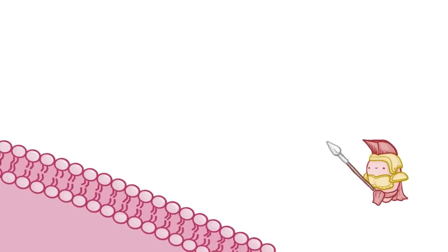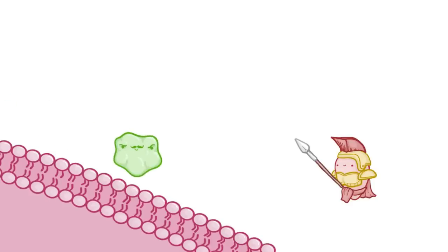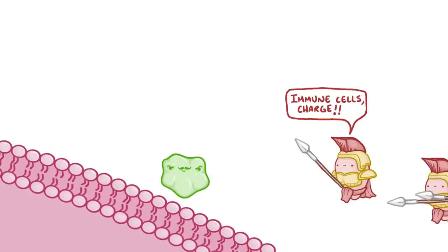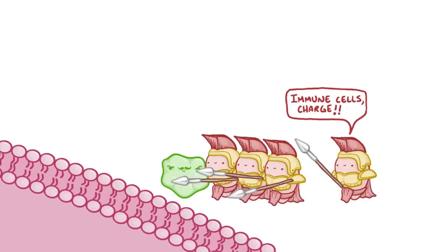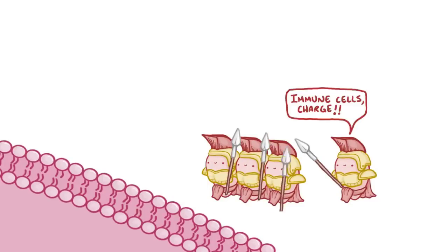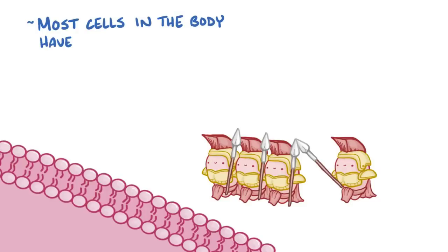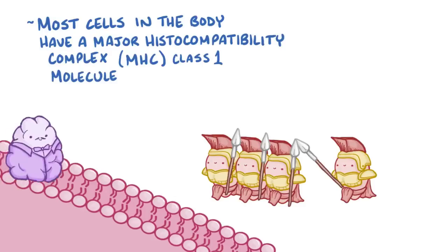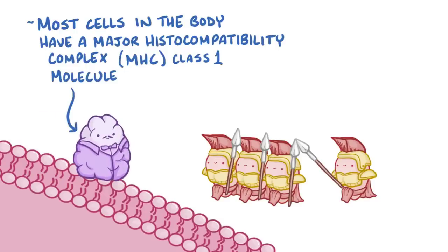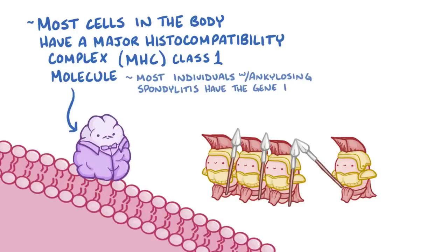Normally, the cells of the immune system are ready to spot and destroy anything foreign that could cause the body harm. To help with this, most cells in the body have a set of proteins that combine together to form something called a major histocompatibility complex, or MHC, class 1 molecule, that sits on the surface of their cell membrane. Most individuals with ankylosing spondylitis have the gene HLA-B27, which is a gene that encodes for a specific type of MHC class 1 molecule.